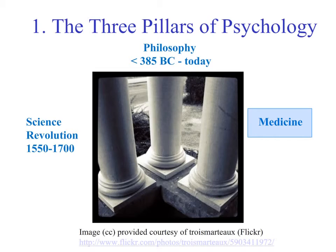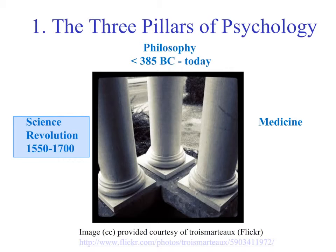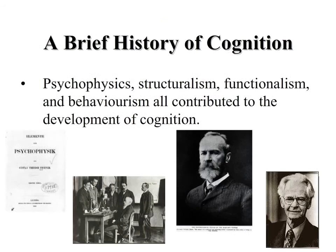Another very important area that dates back as far as the philosophers is medicine. We've always been interested in what this thing in our head does. For some, it was a cooling mechanism. For others, it was the source of the mind and our mental processes and structures. The other component that led to the development of psychology was the scientific revolution that occurred from about 1550 to the 1700s. Those three components — philosophy, medicine, and science — all led to the emergence of what we would call psychology today.